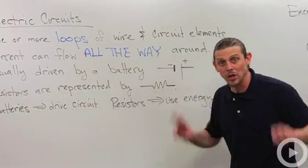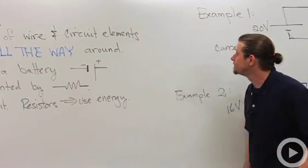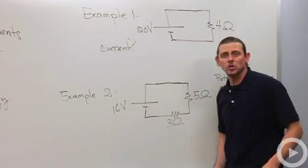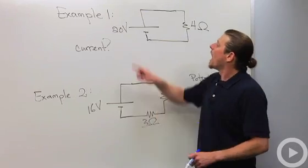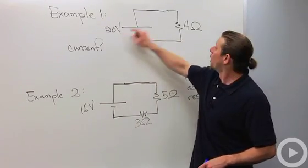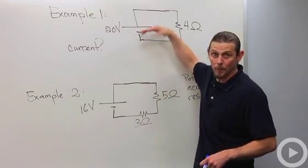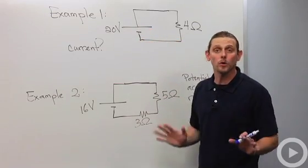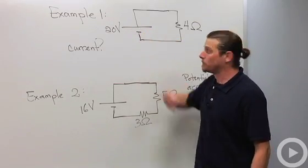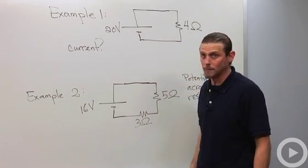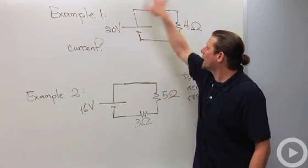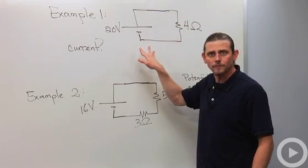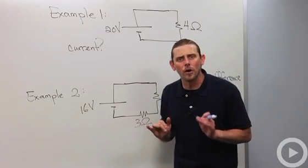Let's see how we can actually solve a circuit. Suppose that I've got a circuit that looks like this one. I've got a 20 volt battery. Notice I didn't put the plus and the minus. I put a long and a short, and you're supposed to know that the long is the plus and the short is the minus. And I want to know what's the current through this circuit.